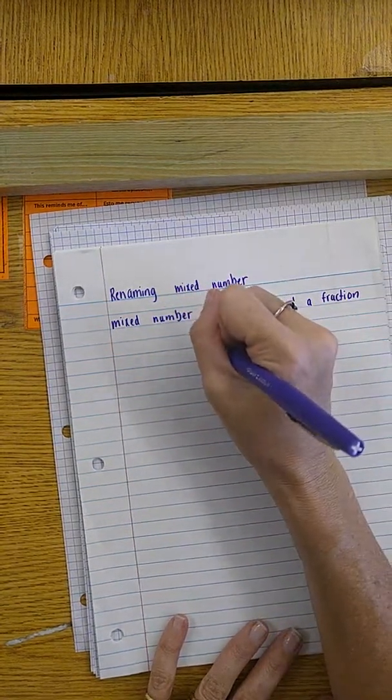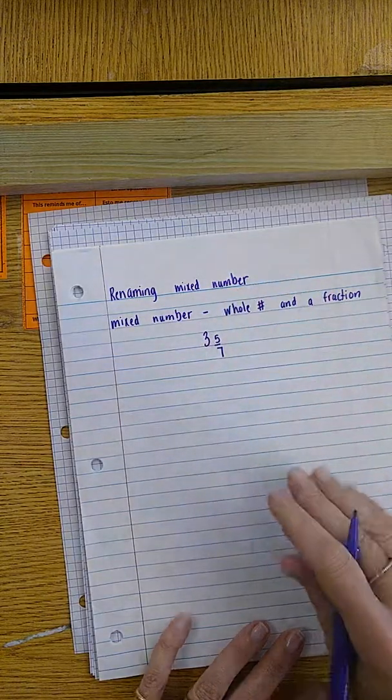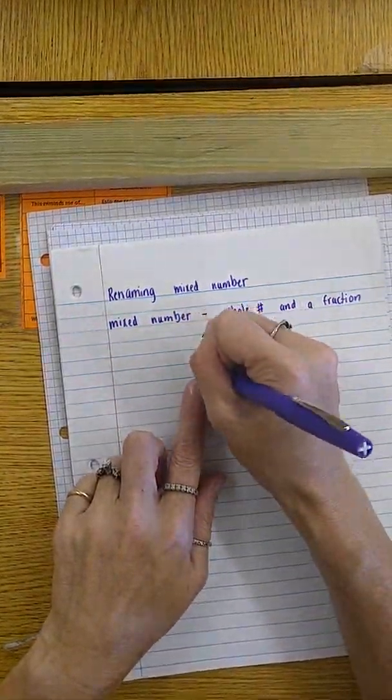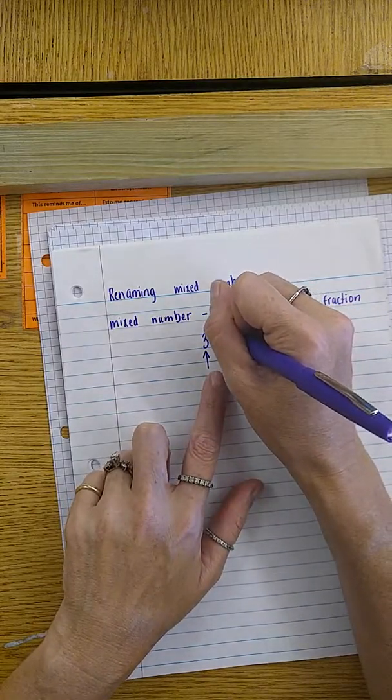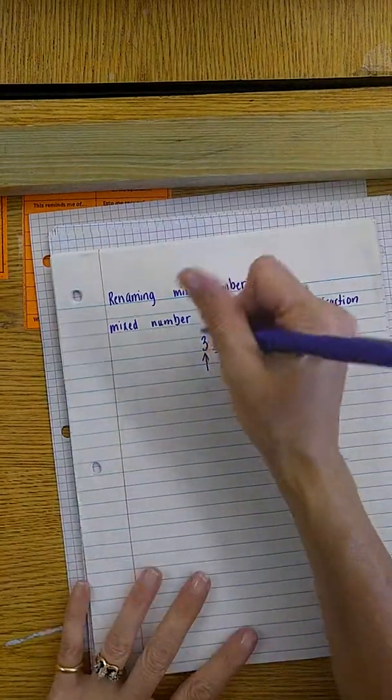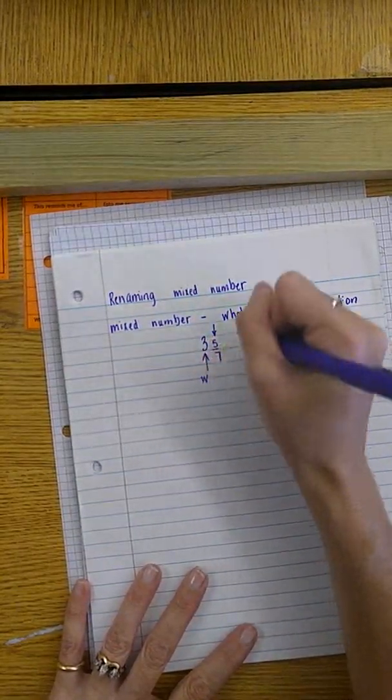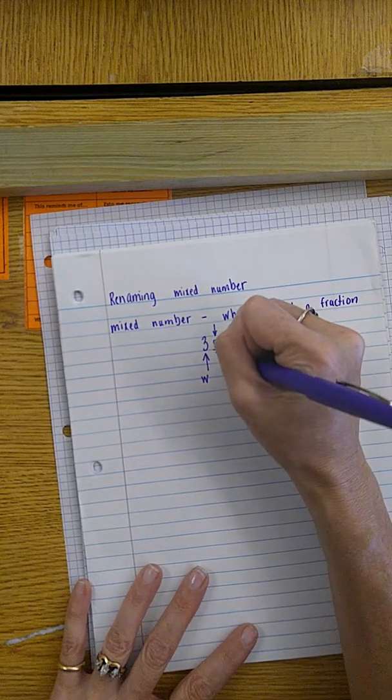So for example, if I have three and five sevenths, this is a mixed number because there are three wholes and there is a fraction of five sevenths. So whole number and this is a numerator and this is my denominator.